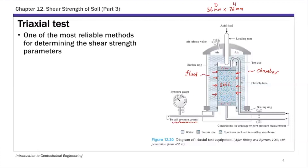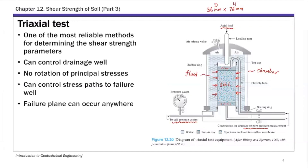The soil specimen is sandwiched between two porous stones, one on top and one at the bottom. These porous stones are connected to drainage so you can measure and control the pore pressure inside the soil specimen. Then you have an axial load on top, which is applied to shear and fail the specimen. You can use force/stress control or displacement/strain control for this axial load.